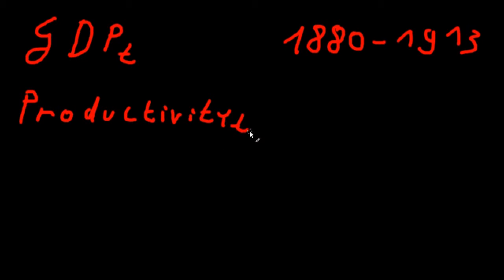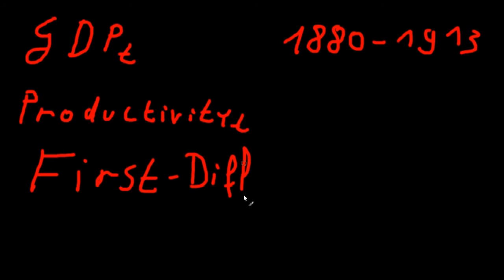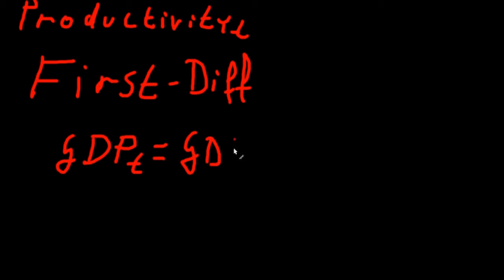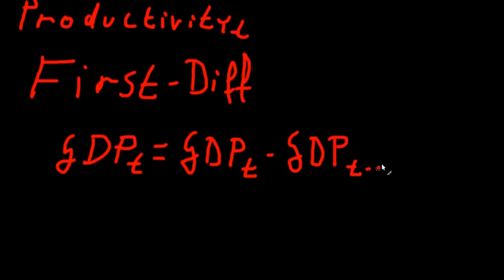First, we have to make sure that our data is stationary. We apply the augmented Dickey-Fuller test, and the test statistic tells us that both variables contain a unit root. Simply detrending is unfeasible because the variables are not trend stationary. So we have to take the first difference. We transform our data so that GDP at time t equals GDP at time t minus 1, notated by adding a capital delta, indicating the first difference of our time series.